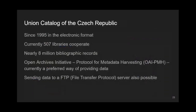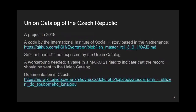The Union Catalog of the Czech Republic is another important project. Since 1995, it has been available in electronic format. More than 500 libraries cooperate, contributing their data, and the catalog contains about 8 million bibliographic records. The preferred way of contributing is via the Open Archives Initiative Protocol for Metadata Harvesting, OAI-PMH. Sending records via FTP is also an option. In 2018, we carried out a project to let Czech Evergreen libraries contribute to the Union Catalog via OAI-PMH, using code provided by the International Institute of Social History in the Netherlands.